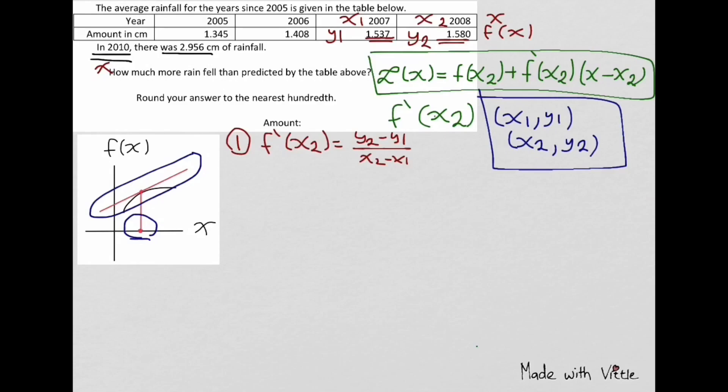So 1.580 minus 1.537 divided by 2008 minus 2007. The answer will be 0.043.